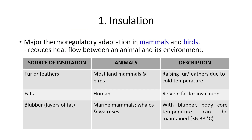There are six general adaptations to help animals thermoregulate: insulation, circulatory adaptation, cooling by evaporative heat loss, behavioral responses, adjusting metabolic heat production, and physiological thermostat. Number one — insulation: a major thermoregulatory adaptation in mammals and birds that reduces heat flow between an animal and its environment. Sources of insulation include fur or feathers in most land mammals, fats in humans, and blubber — layers of fat — in marine mammals such as whales and walruses, allowing their body core temperature to be maintained at 36 to 38 degrees Celsius.